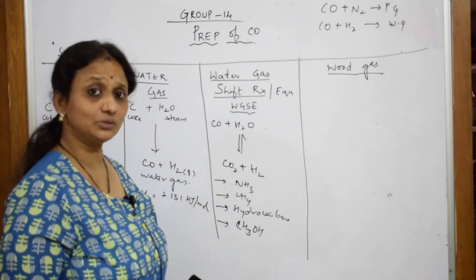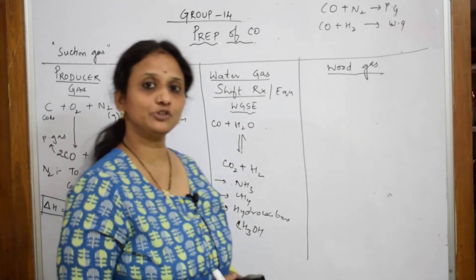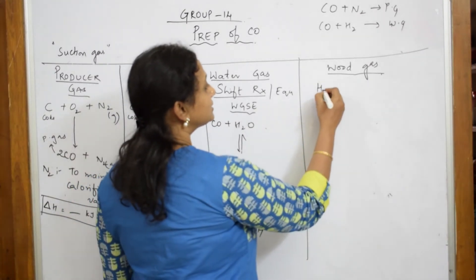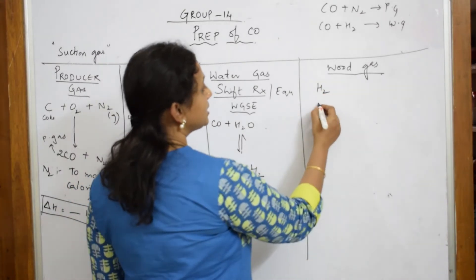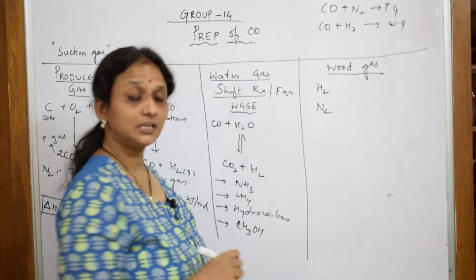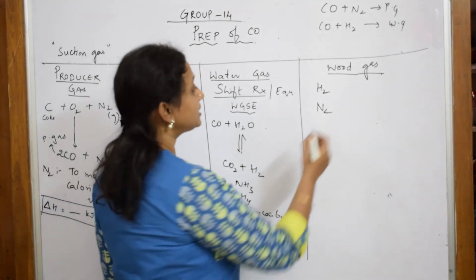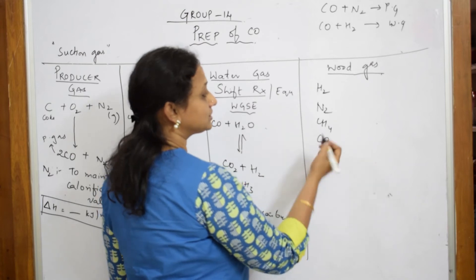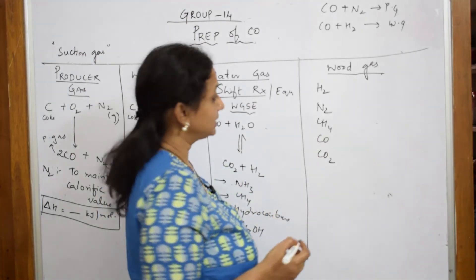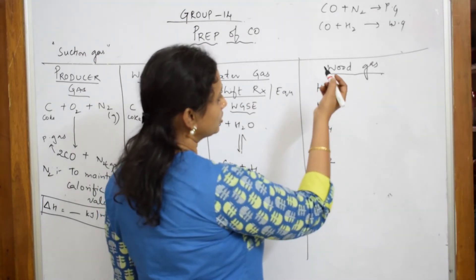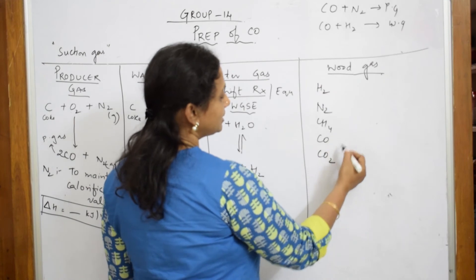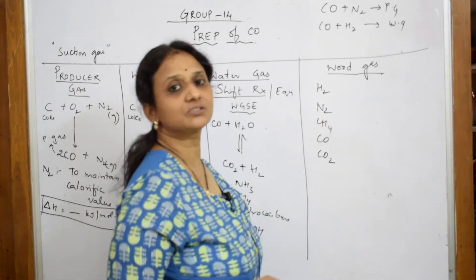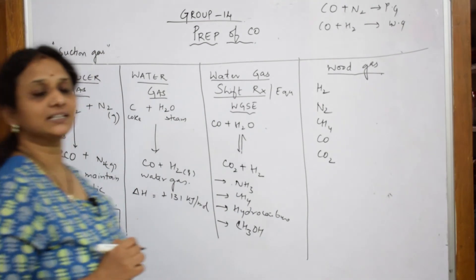Let us come back to wood gas. Wood gas basically — I will give you the composition. Wood gas contains hydrogen traces, nitrogen, methane, carbon monoxide, and carbon dioxide. This whole composition — these are the main components, while others are in trace quantities — which is called wood gas.